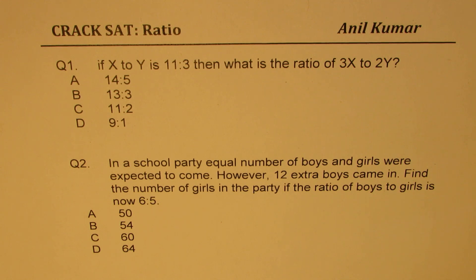Question number two. In a school party, equal number of boys and girls were expected to come. However, 12 extra boys came in. Find the number of girls in the party if the ratio of boys to girls is now 6 is to 5.